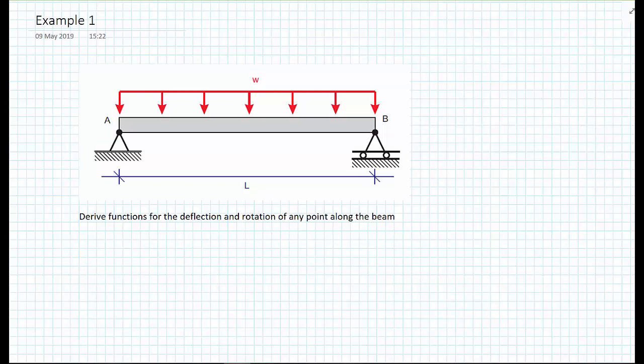In this video, we're going to calculate functions for the rotation and deflection of any point along a beam by way of an example. The example we're choosing is a simply supported beam with a UDL applied across the entire length L of this beam. So we have beam AB, length L, and the UDL little w.